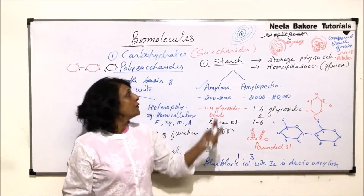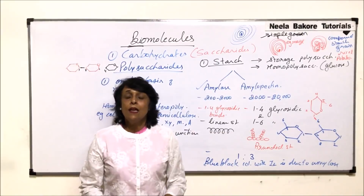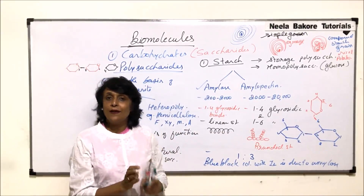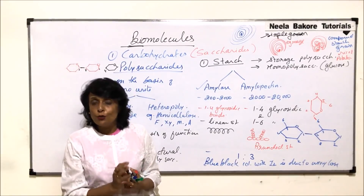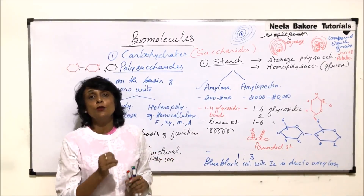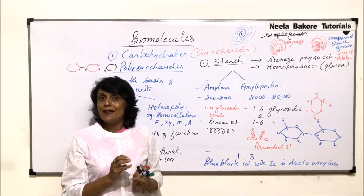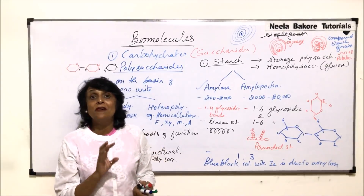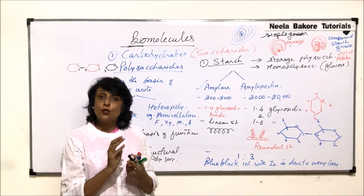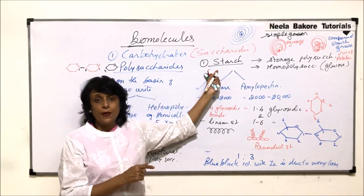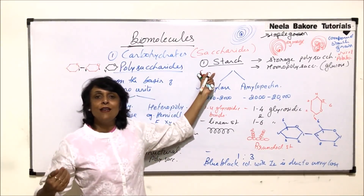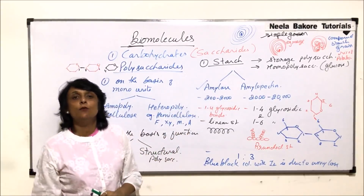Plants synthesize carbohydrates as glucose, which is a reducing sugar and highly reactive. So when it is transported, it is converted into sucrose, which is a non-reducing disaccharide that will not react with anything. So carbohydrates are synthesized as glucose, transported as sucrose, and stored as starch. When the plant wants to use it, starch is ultimately broken down into glucose.